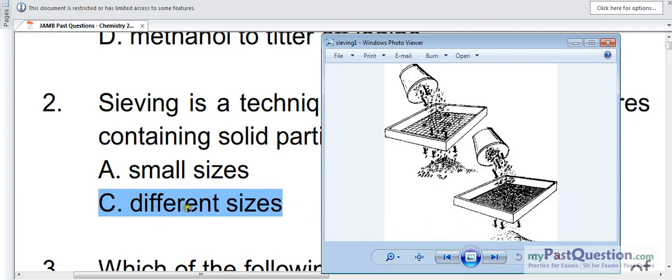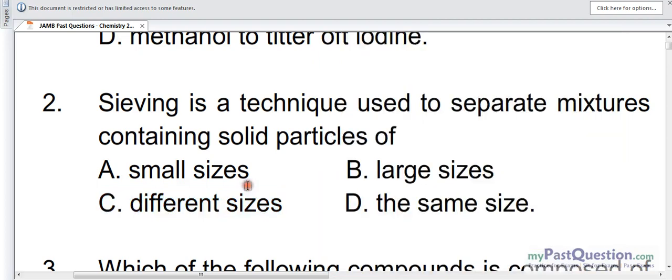So take note. Number C is the correct answer. You can see sieving is a technique used to separate mixtures containing solid particles of different sizes. C is the answer.